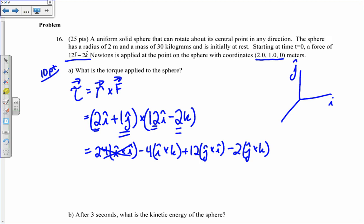Last FOIL, 1 times negative 2 is negative 2j cross k. My i cross i term goes away, because i cross i equals 0. I need to know what these cross products are. i cross k, if I let my fingers go in the direction of i, they fold towards k. My thumb goes in the negative j direction. So I'm getting 4j. j cross i gives negative k. And then j cross k is i. So I get 4j minus 12k minus 2i.